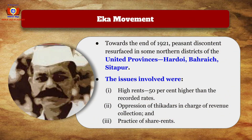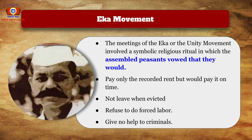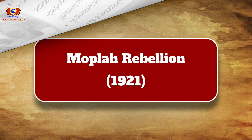Towards the end of 1921, the Eka Movement took place as a result of peasant discontent resurfacing in northern districts of the United Provinces like Hardoi, Bahraich, and Sitapur. Issues included high rents — 50% higher than recorded rates — oppression by tikanadars in charge of revenue collection, and practice of share rents. The Eka or Unity Movement involved a symbolic religious ritual where peasants vowed to pay only the recorded rents on time, refuse eviction, not perform forced labor, and abide by panchayat decisions. Grassroot leadership came from Madari Pasi and other lower-caste leaders. By March 1922, severe repression by authorities brought the movement to an end.